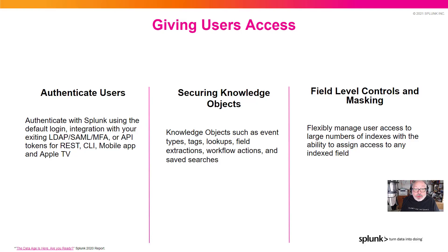Securing your knowledge objects can be done at different levels, such as event types, tags, lookups, field extractions, workflow actions, and saved searches. You also have the ability to do field level controls and masking. This flexibility allows you to manage user access through a large number of indexes, with the ability to assign access across any indexed field.